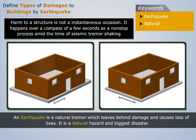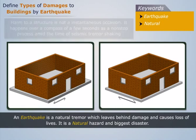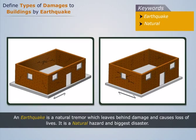Harm to a structure is not an instantaneous occasion — it happens over a span of a few seconds as a non-stop process amid the time of seismic tremor shake. As we can see, the force by earthquake comes in two directions, back to back, and affects the building.